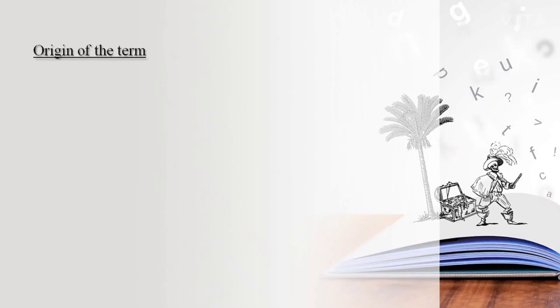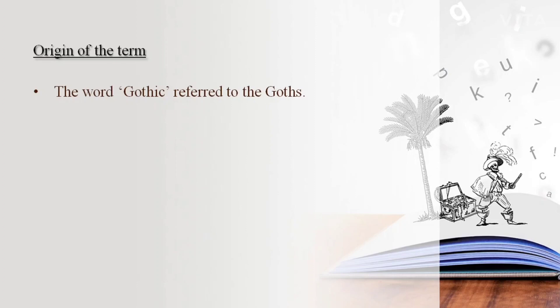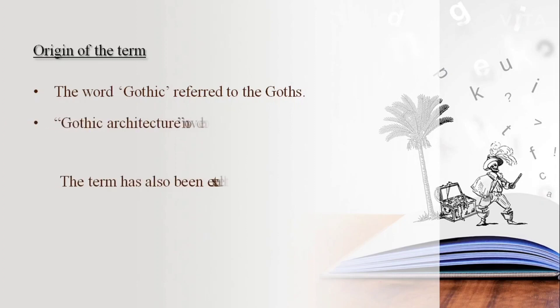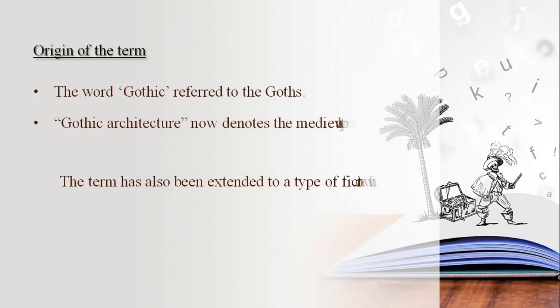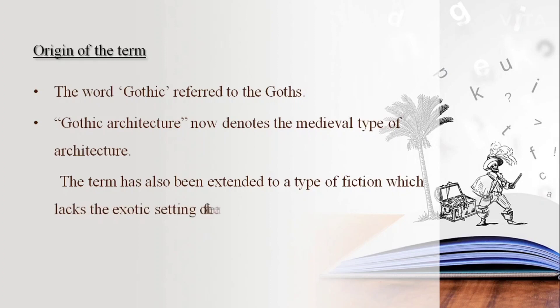Regarding the origin of the term: the word 'gothic' referred to the Goths, a Germanic tribe. Gothic architecture now denotes the medieval types of architecture.